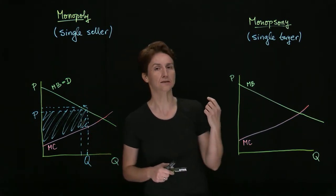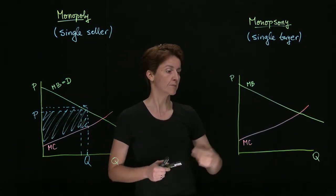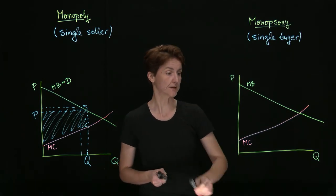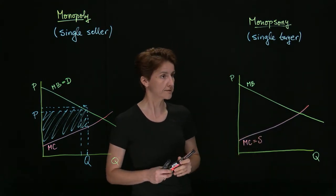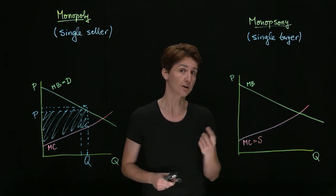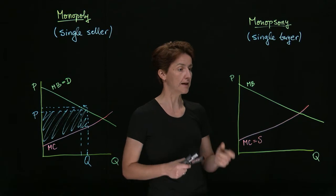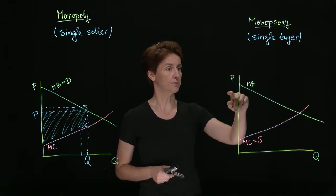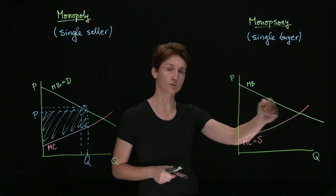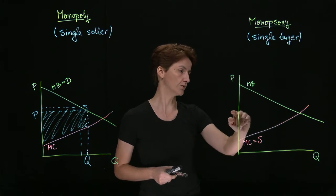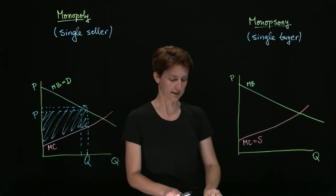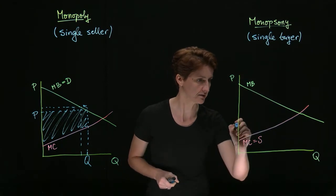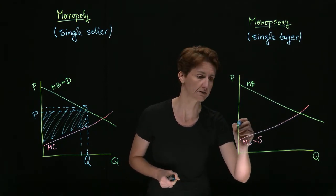Similarly, if there's a single buyer in the market, if the supply side is competitive, then marginal cost is also going to show us the supply curve. However, marginal benefit will not be the demand curve. Now a single buyer will be able to control the price. They will want to offer a lower price than the competitive one. Let's say that they charge a price here, that they offer rather a price here.